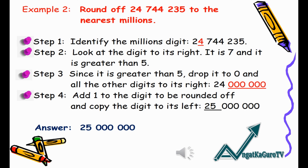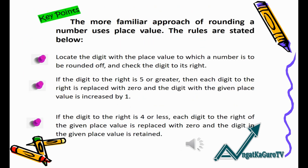Step 2: Look at the digit to its right — it is 7 and it's greater than 5. Since it is greater than 5, drop it to zero and all the other digits to its right. Step 4: Add one to the digit to be rounded off and copy the digit to its left. The answer is 25,000,000.